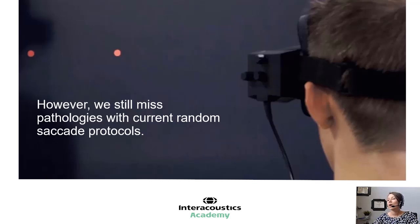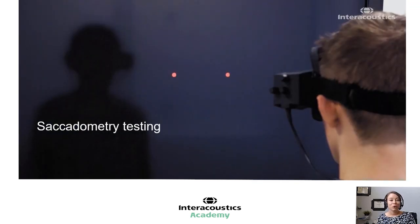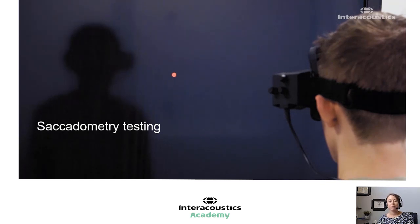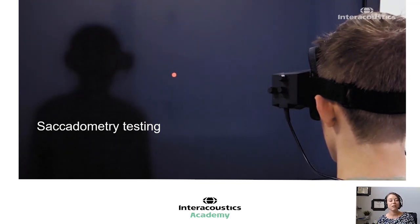Unfortunately, there are many times that we see patients who have diagnosed central disorders, and yet they have a normal random saccade test. So it makes us think, is this test sensitive enough to pick up true central dysfunction? There's been a new test released in the visualized software called saccadometry. Although it's new to VNG equipment, it is not new to the literature. Neurologists have been utilizing saccadometry for many years because they know the value of the sensitivity of this test, specifically with those who have central disorders.